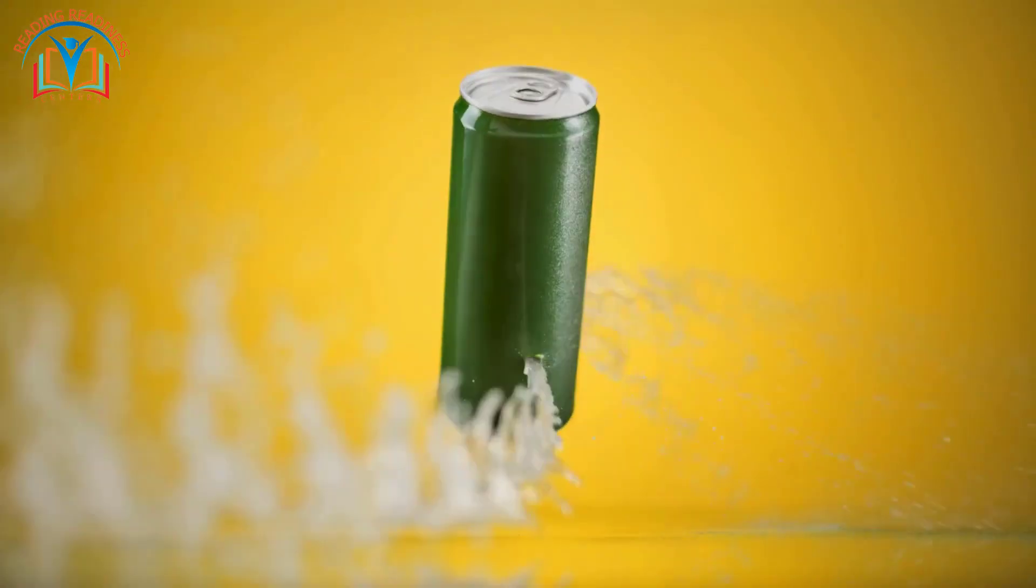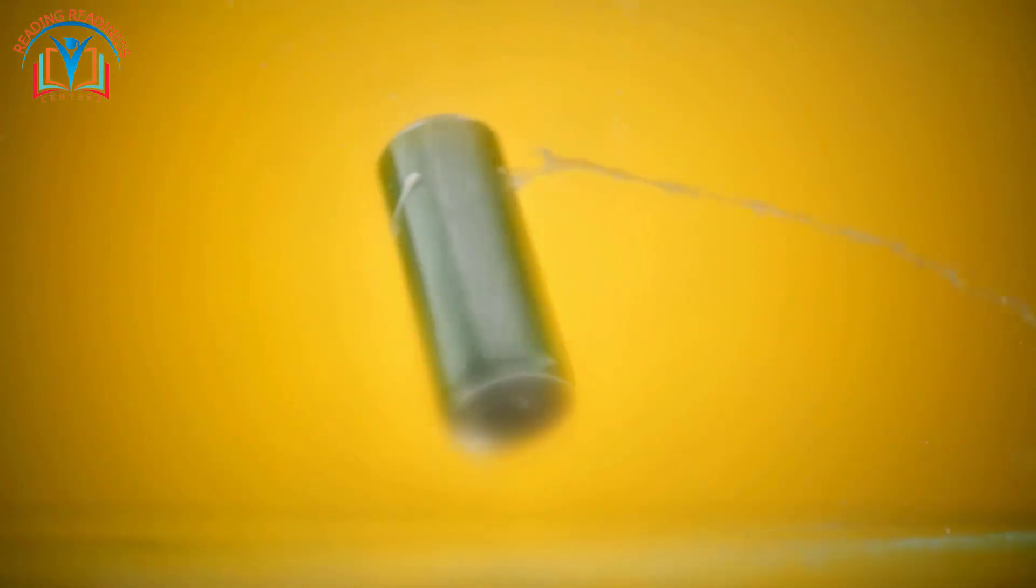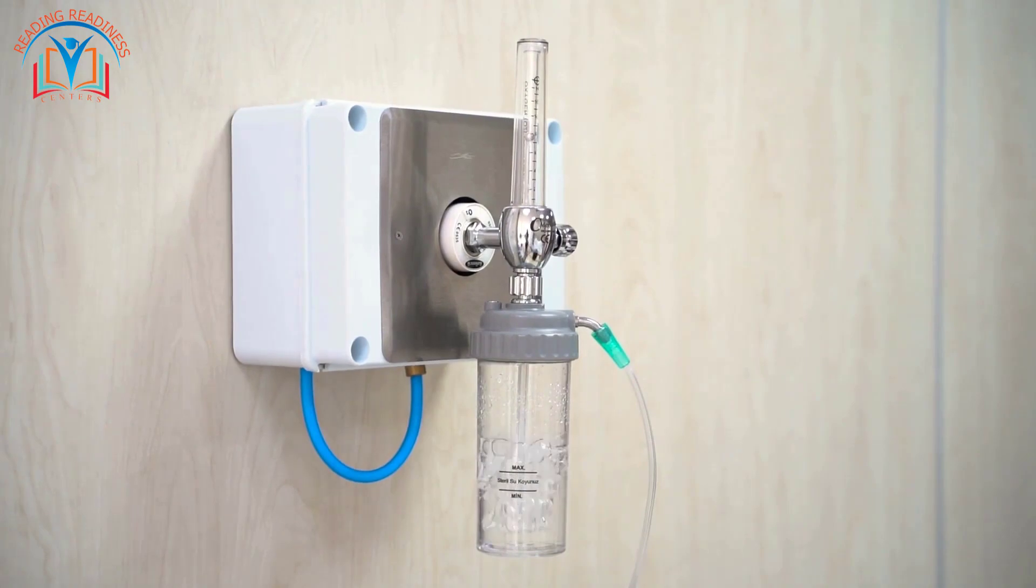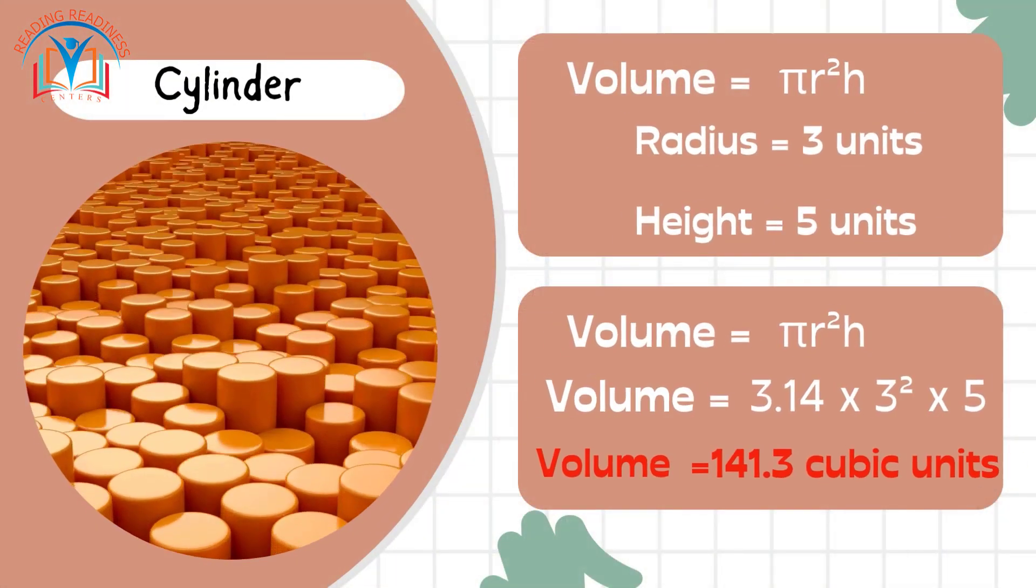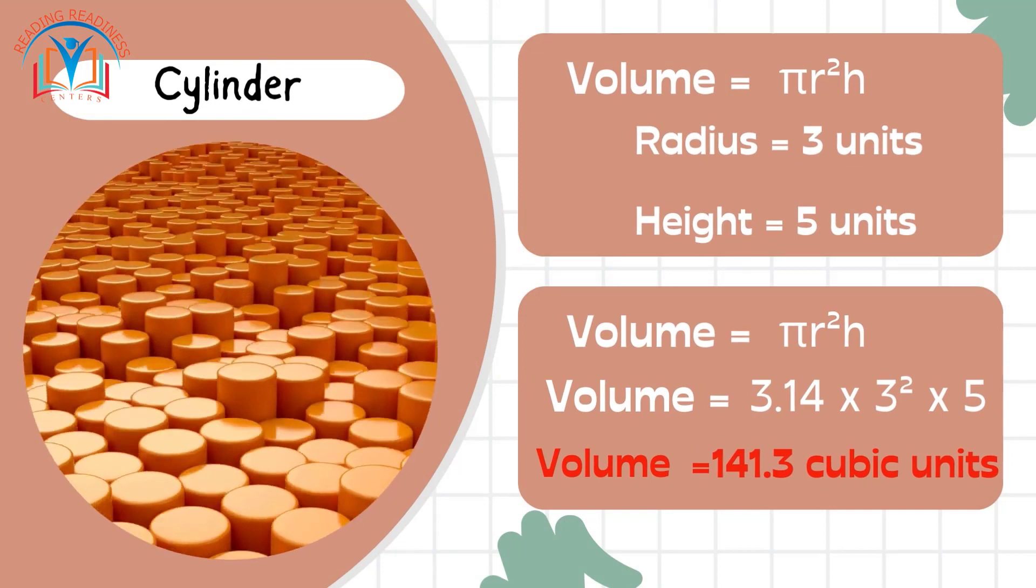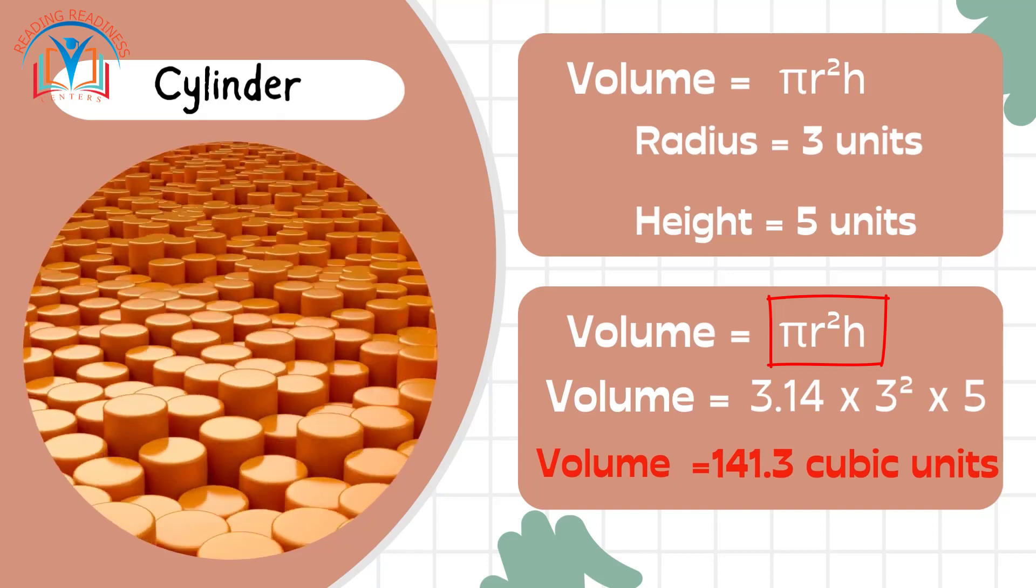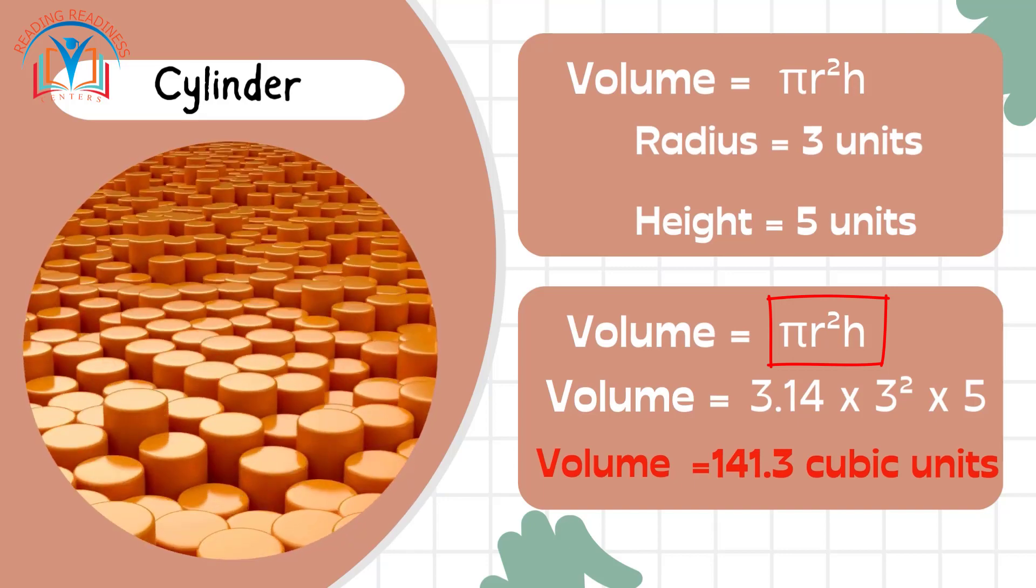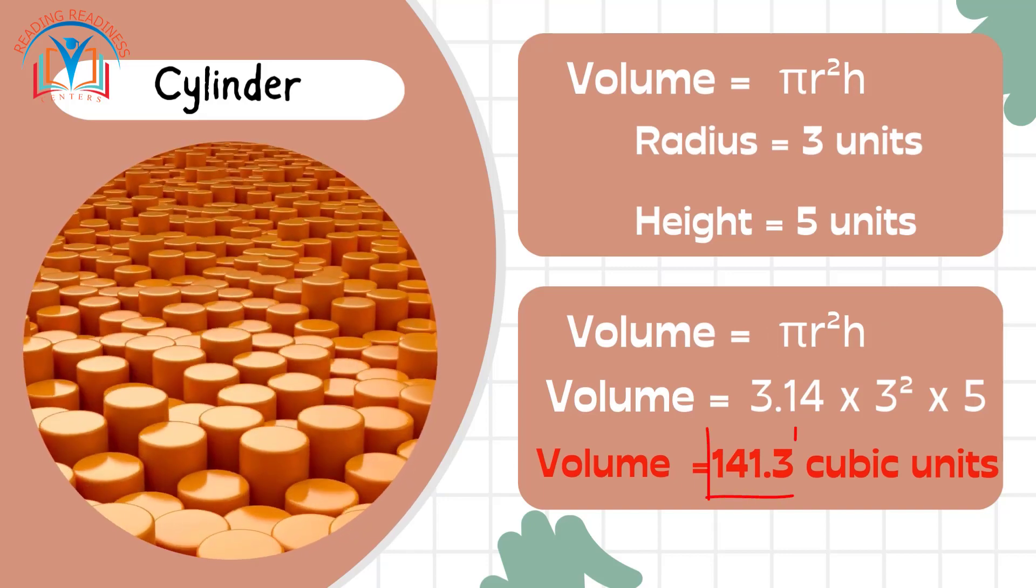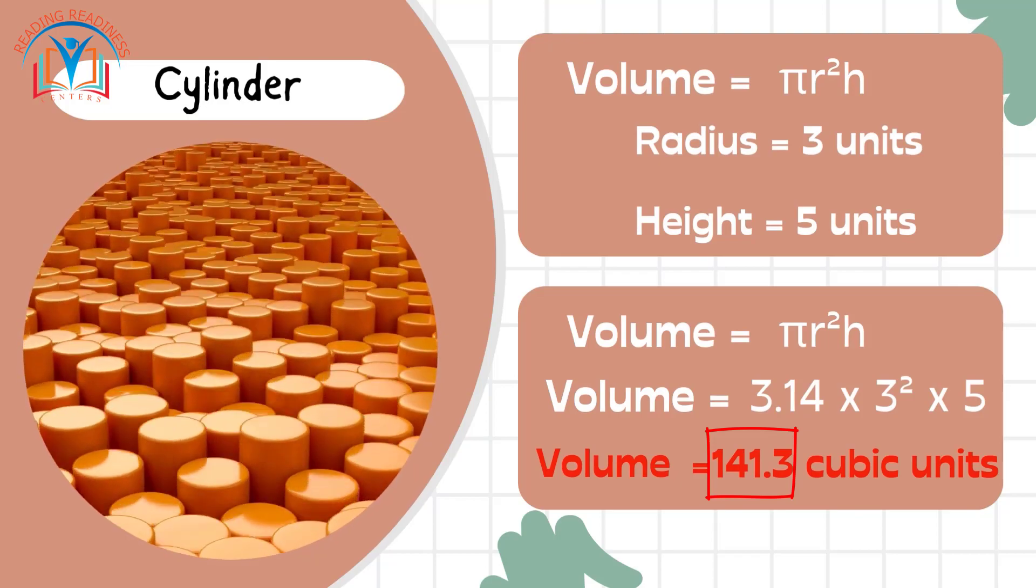Cylinders. Imagine pouring water into a cylindrical tank. Consider a cylinder with a radius of 3 units and a height of 5 units. The volume formula involves pi times the radius squared times the height. Crunching the numbers, we get 141.3 cubic units.